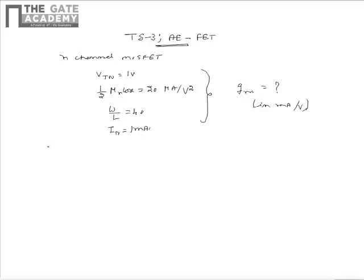From the given data, we can get the relation between the different parameters as KN is equal to half μN COX multiplied by W by L. We know that the first half of the expression, half μN COX, can be written as 20 microampere per volt squared, and W by L can be written as 40.